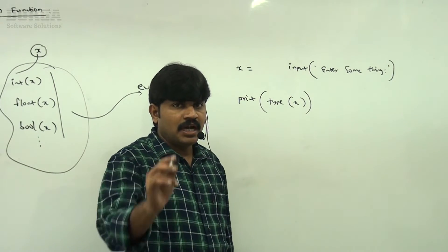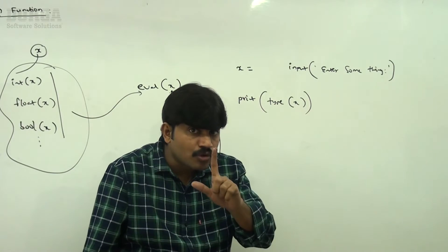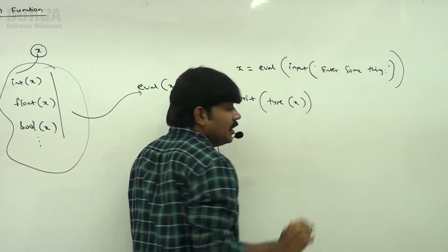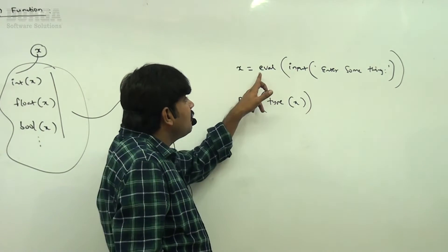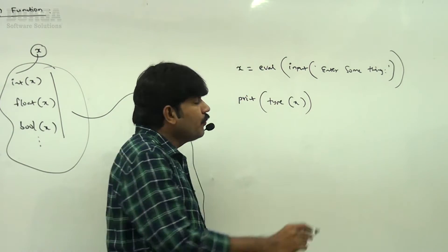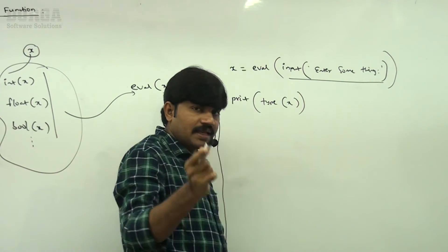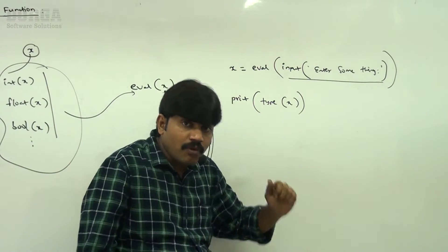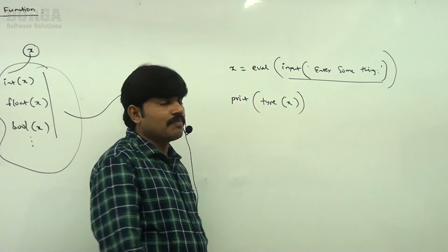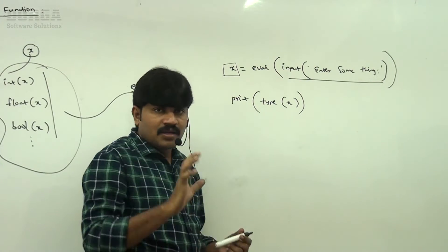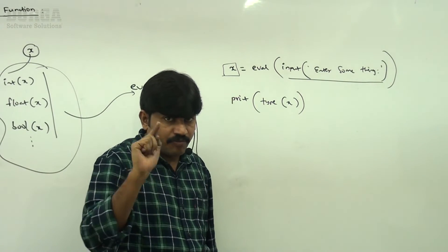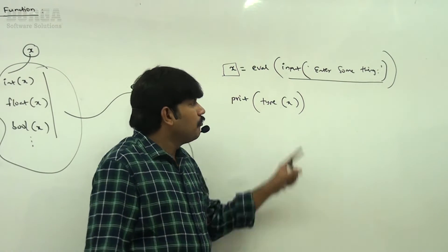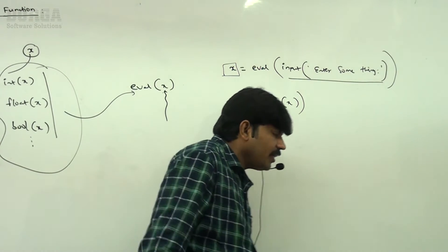But based on the provided value, I want to convert it to the corresponding type automatically. Instead of using int(), float(), or bool(), I simply use eval(). If your provided value is int type, it is automatically converted to integer. If it is float type, it is automatically converted to float type. So x is not always str type — based on your provided value, the corresponding type is automatically considered. That is the beautiful eval() function.